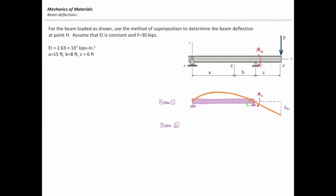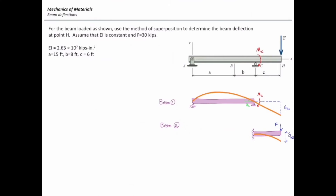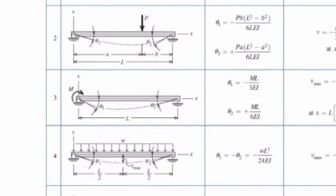Now let me do the calculations. First, beam number one. I will go back to the table and use row three, since that is the case where the simply supported beam is subjected to a moment. Which theta should I use — theta one or theta two? I need to determine the slope of the beam on the right side. I have to pick theta one because that is the case where deflection occurs at the point where the moment is applied — it doesn't matter if it's on the right or left side, you can simply switch.